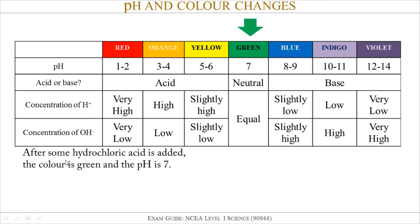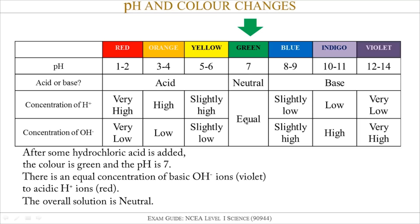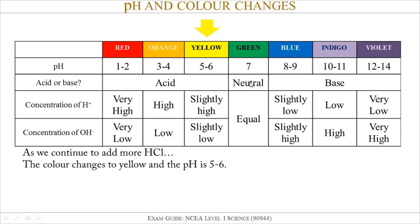After adding some hydrochloric acid, the color turns green and the pH is 7. The concentration of H+ and OH- ions are equal to each other, and overall the solution is neutral.